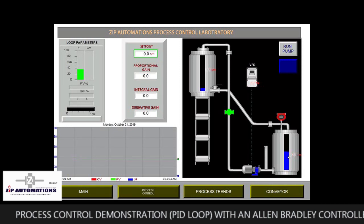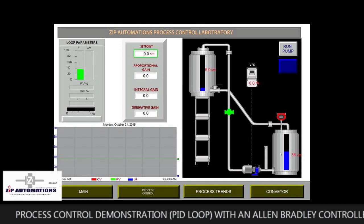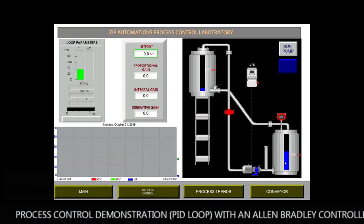Let's assume our set point is 22cm. What that means is we are trying to keep the water level in this tank at 22cm. So if the water goes above 22cm, the program is going to ramp up the VFD to drain water from this tank back to our set point of 22cm. And if the water level goes below our set point, the program is going to ramp down the VFD, attempting to shut it down.